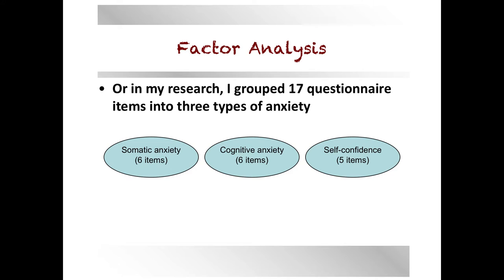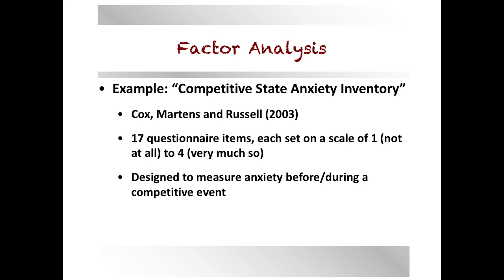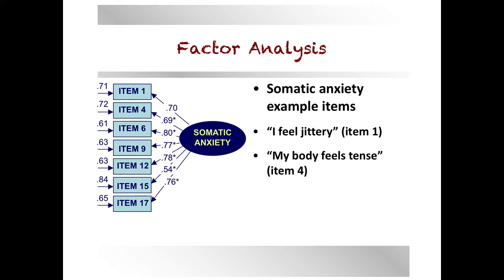In my dissertation and subsequent studies I've used the Competitive State Anxiety Inventory (CSAI-2), which has three dimensions and 17 items grouped into somatic anxiety, cognitive anxiety, and self-confidence. It uses a scale of one to four — 'not at all' to 'very much so' — and is designed to measure anxiety before or during a competitive event, which could be a sports competition, a public speech, or another stressful or anxiety-provoking event.